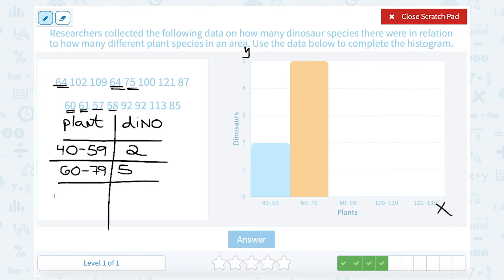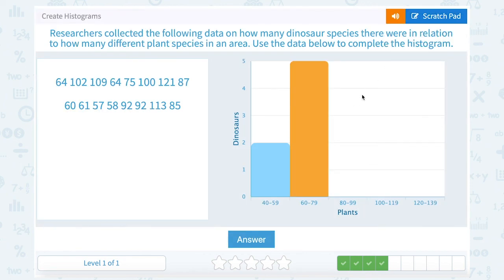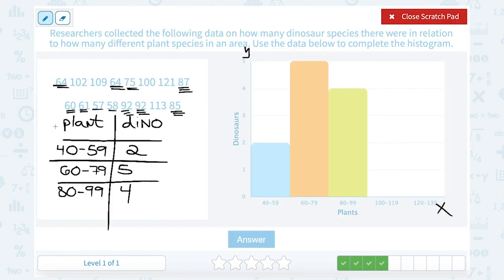Our next range of numbers is 80 to 99. Okay, and let's count how many of these numbers fall between 80 and 99. I've got 1, 2, 3, and 4.